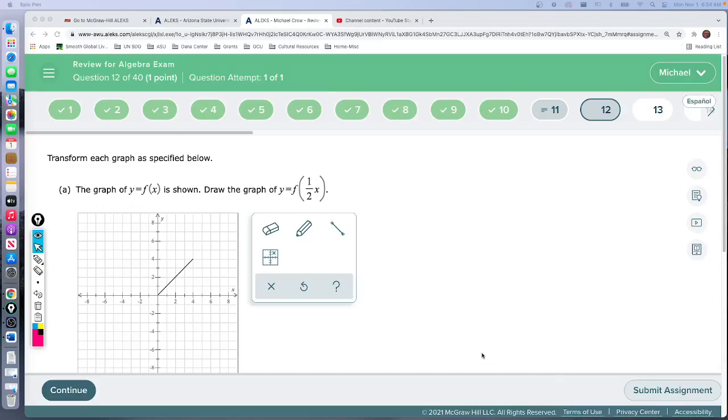So question number 12. We have this graph and we're supposed to draw the graph of f of 1 half of x.